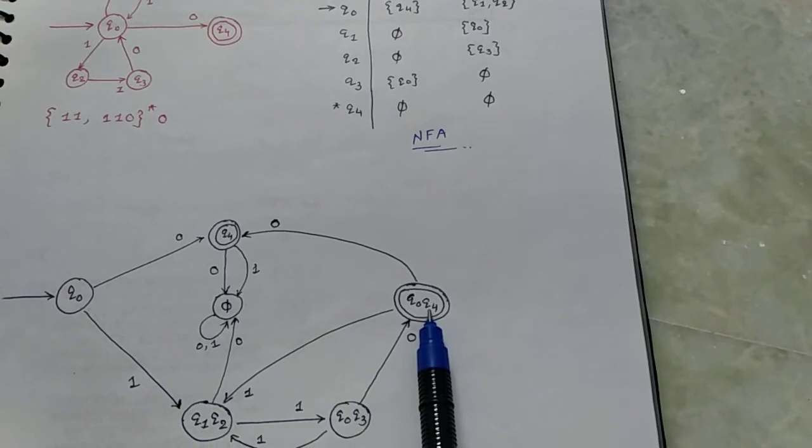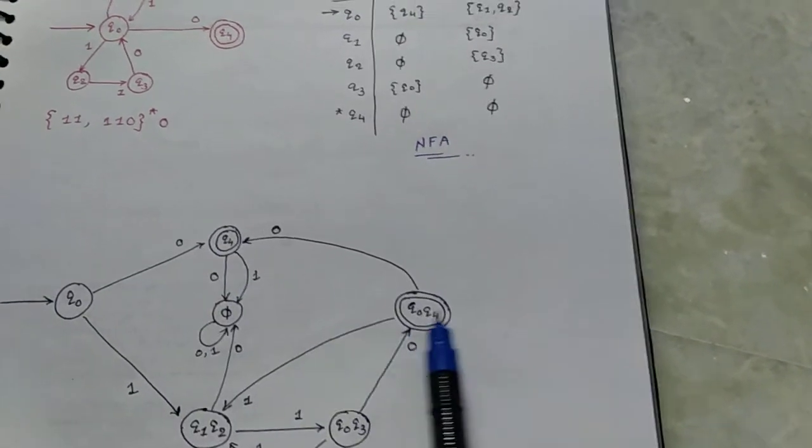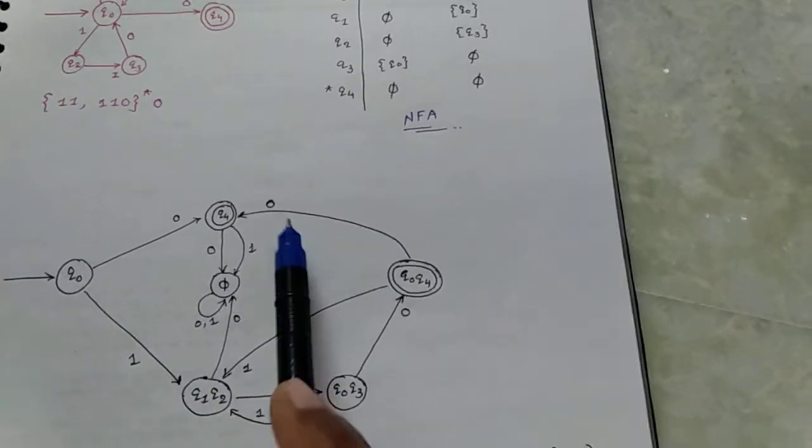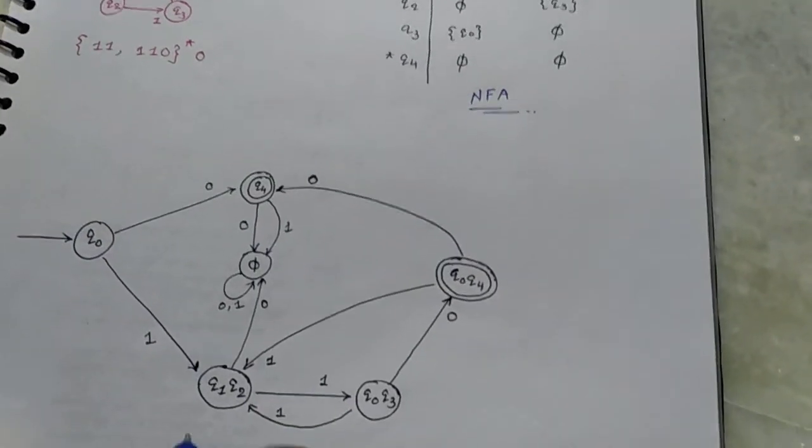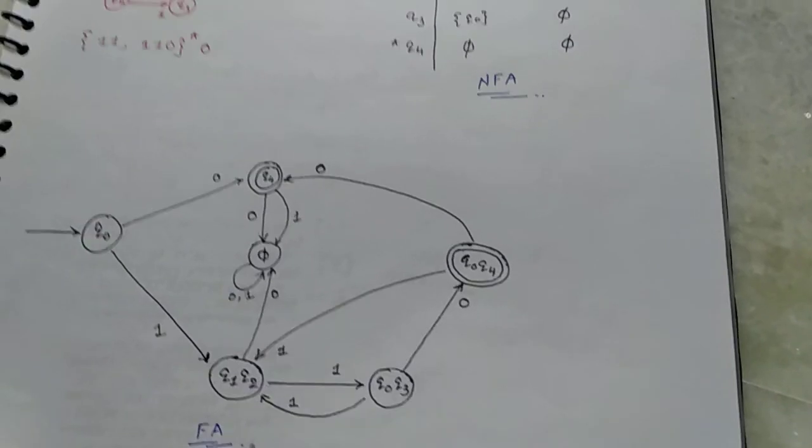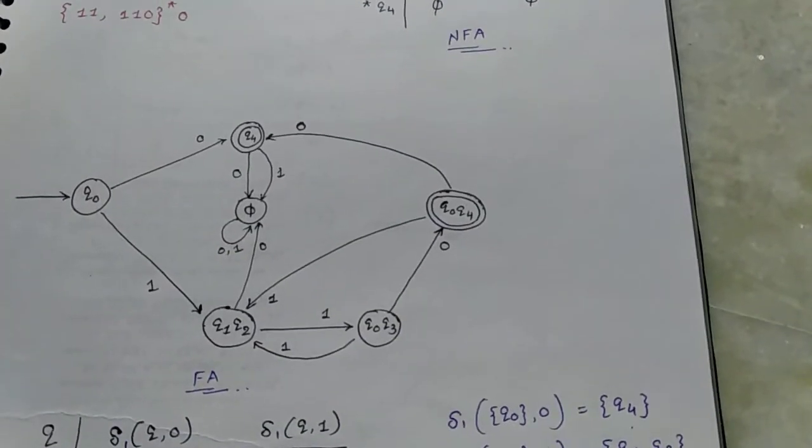In these states, q4 appears at this place and is also combined with these states, so these two states are final states. This is the final FA for the given NFA. Thank you.